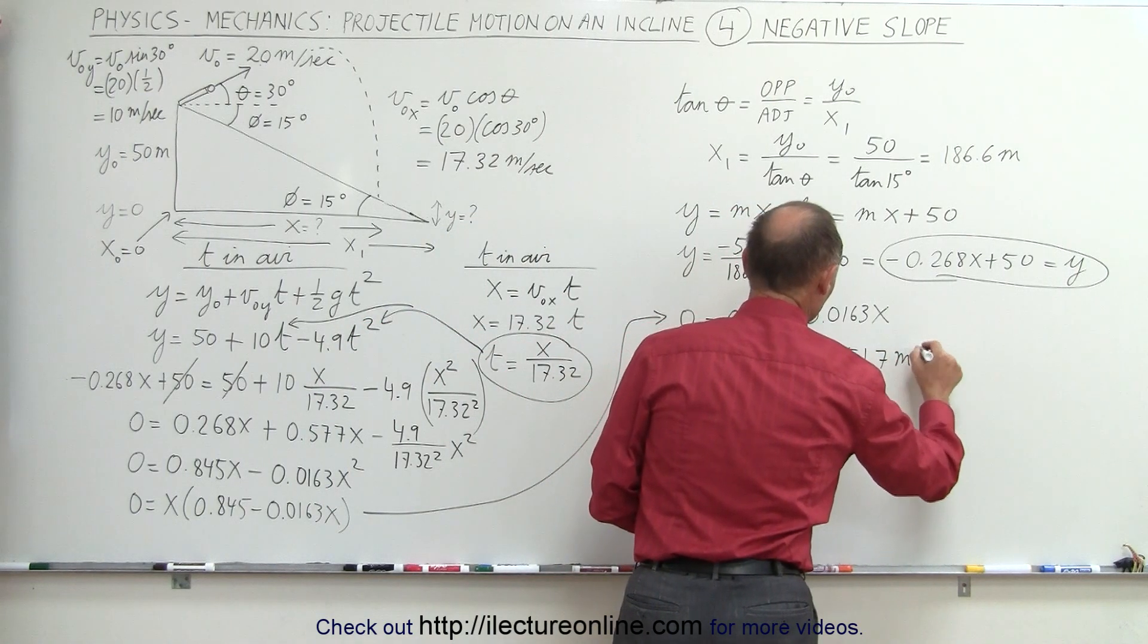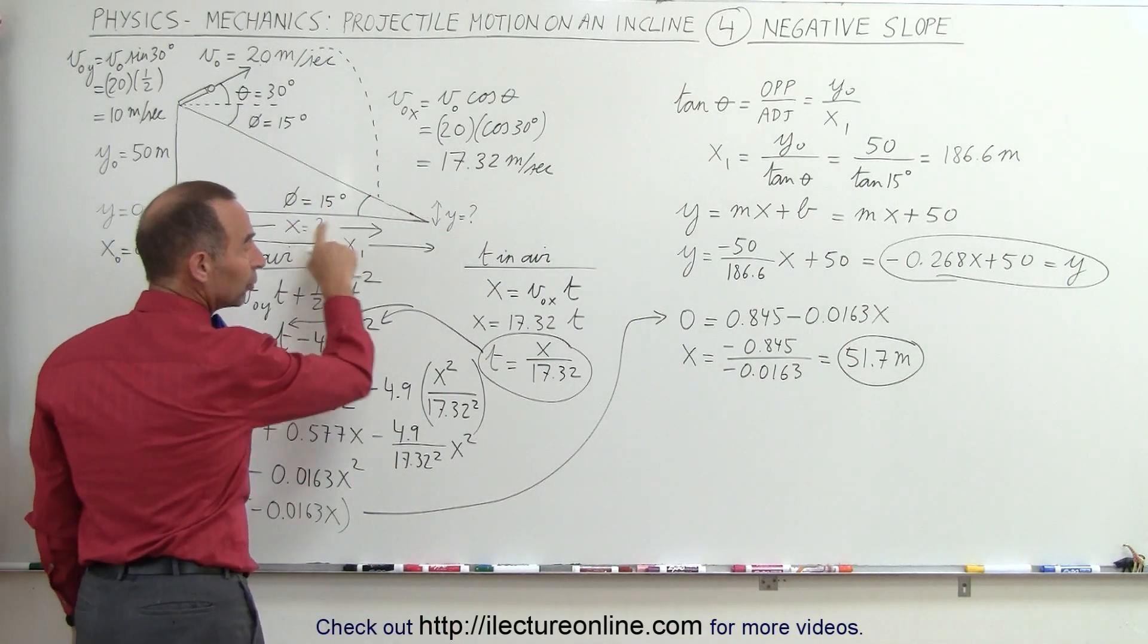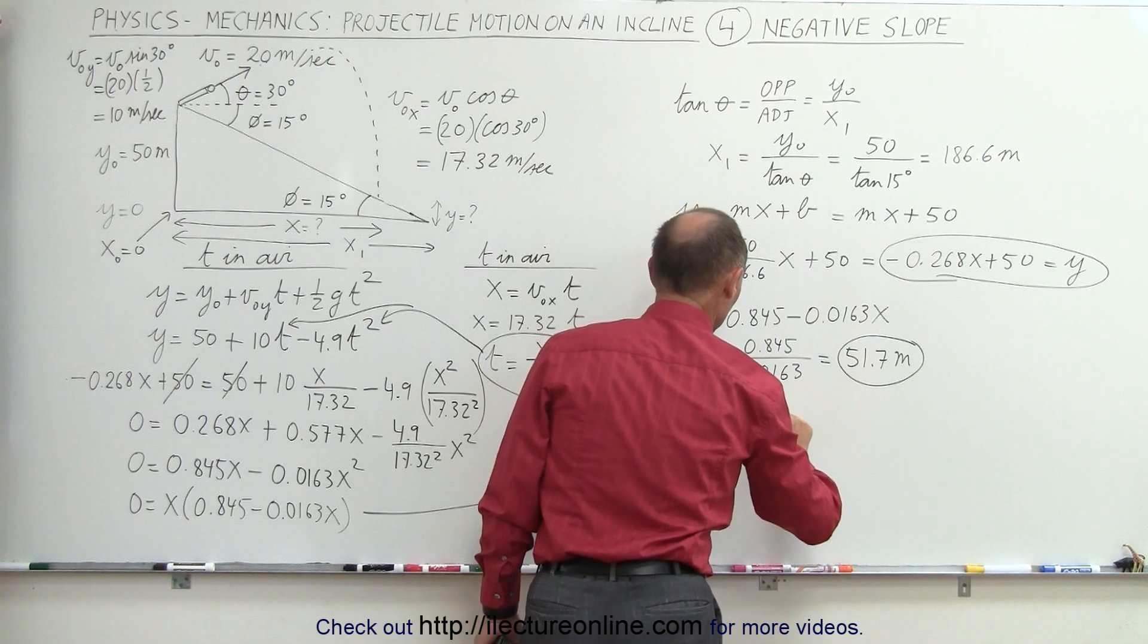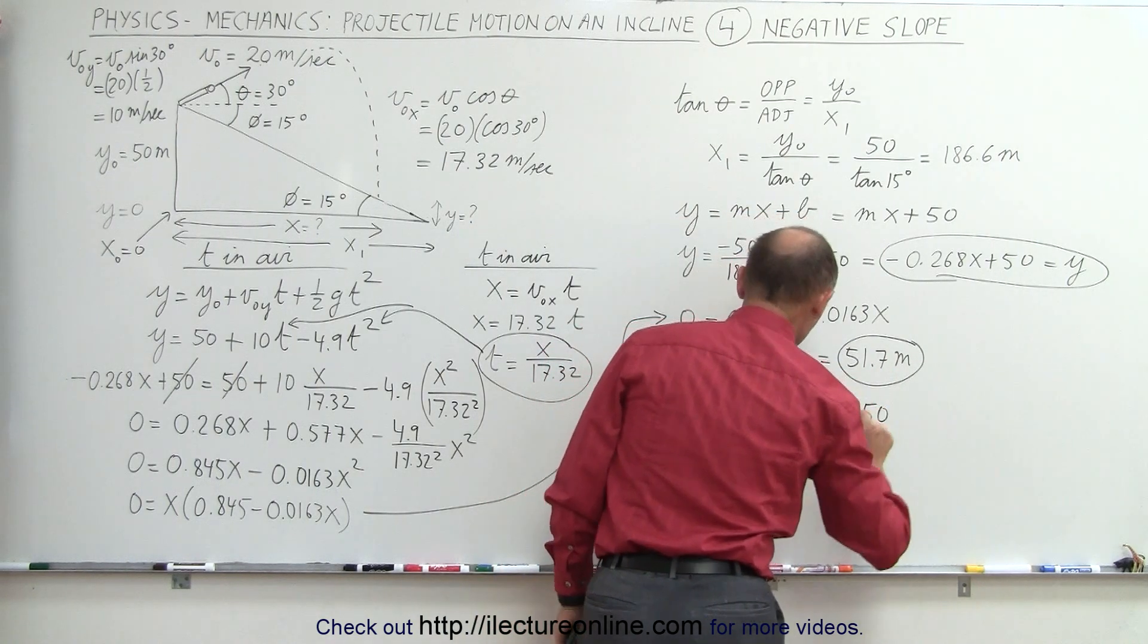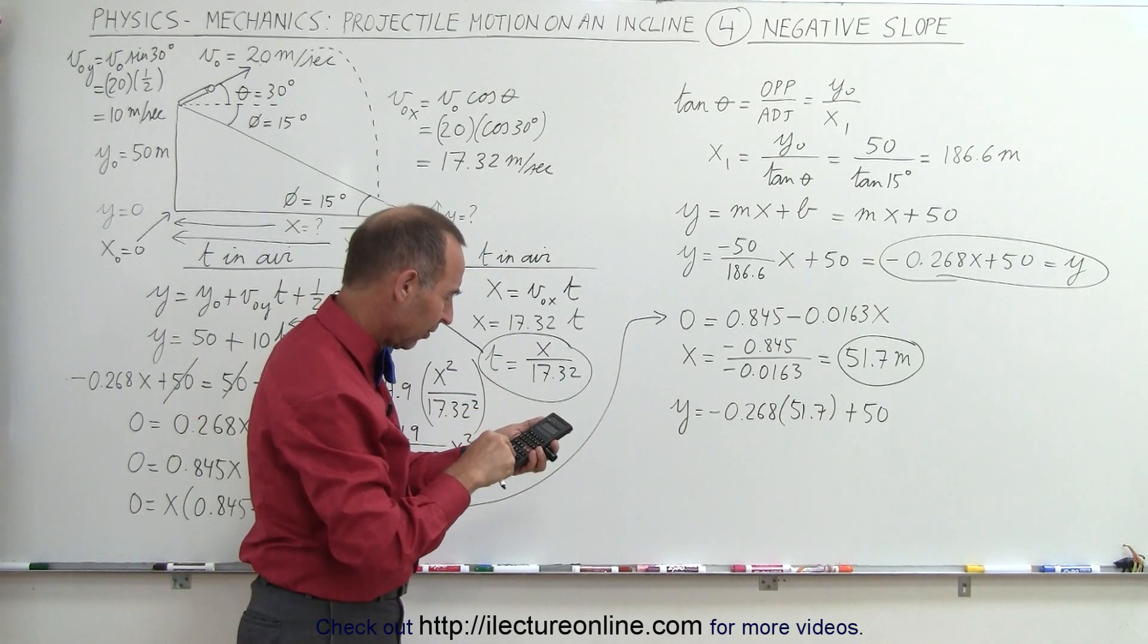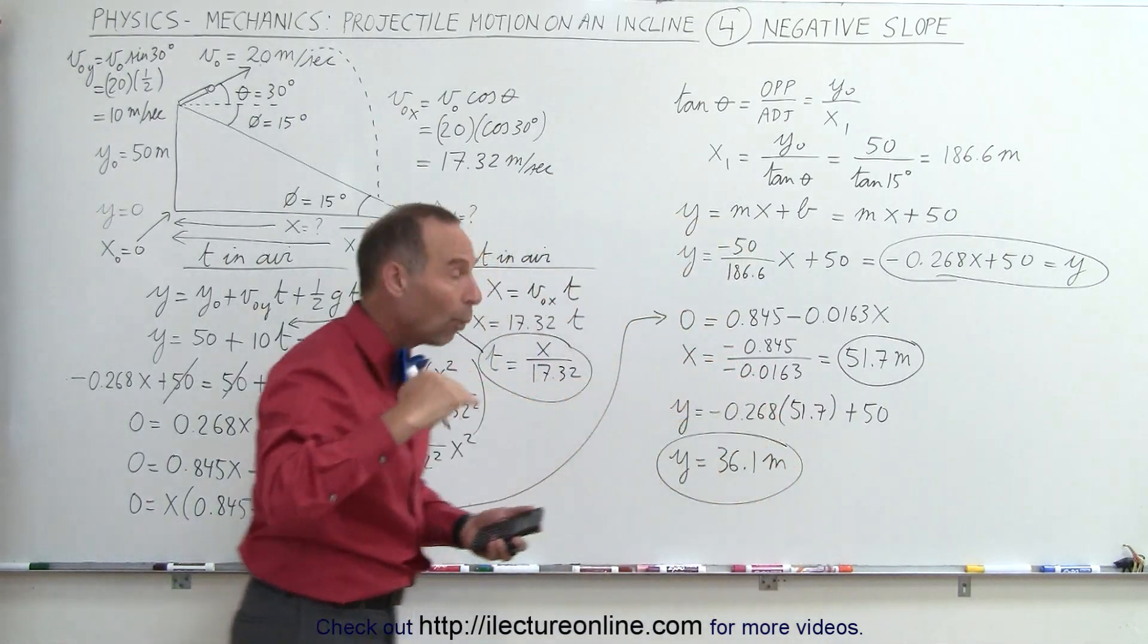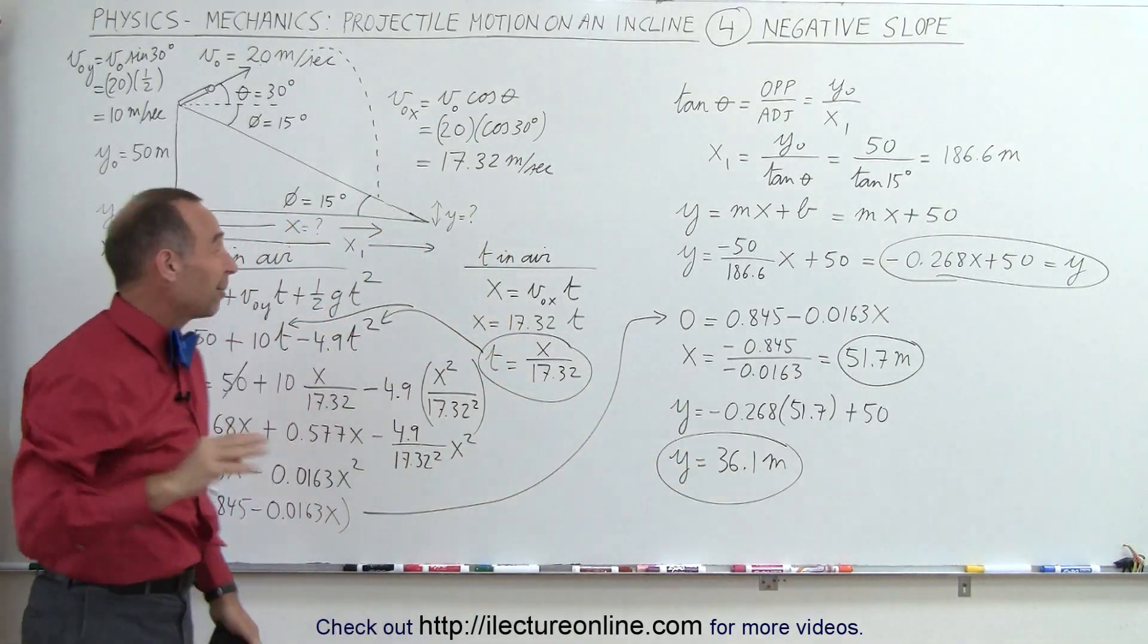That's the horizontal distance our projectile will reach from here to there it's equal to 51.7 meters and then using our other equation right here we say that y is equal to minus 0.268 times 51.7 plus 50 equals and we can see that y is equal to 36.1 meters and that would be above y equals zero so from there to there is a height of 36.1 meters slightly off on the drawing but we'll just ignore that.